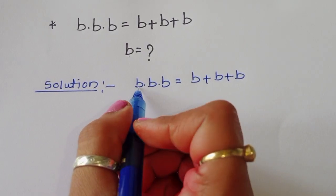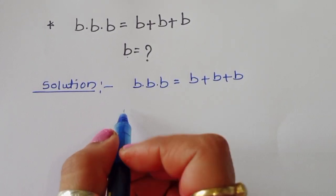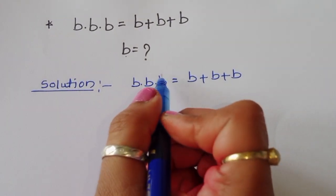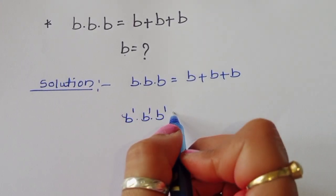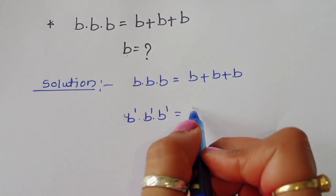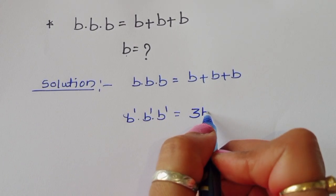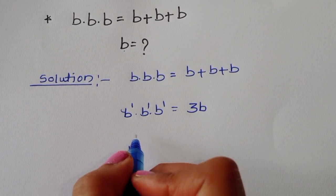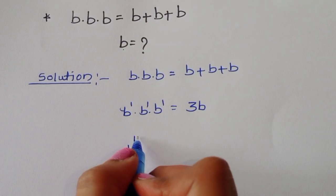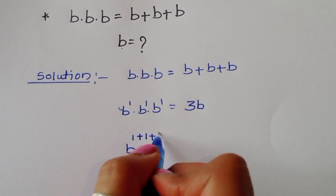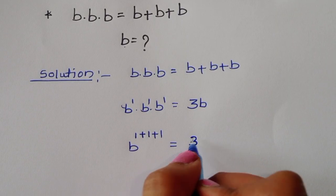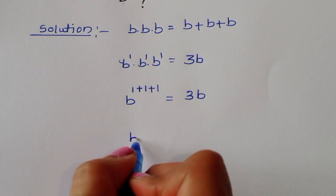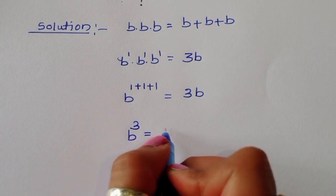We can write b times b times b as b power 1 times b power 1 times b power 1. The right side b plus b plus b becomes 3b. When we add the powers on the left, 1 plus 1 plus 1 gives us b power 3.